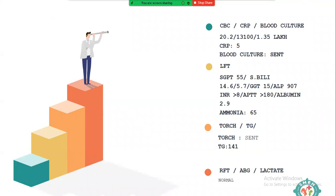Investigation results at our center: hemoglobin 20, WBC 13,000, platelets improved to 135,000, CRP 5, blood culture later turned out negative. On LFT, SGPT was 55, bilirubin still high with elevated direct component — consistent with conjugated cholestasis. GGT was normal, but INR was greater than 8, with liver function deteriorating rapidly every day. Albumin was 2.9, ammonia 65. TORCH titers, triglycerides, RFT, blood gas, and lactate were all normal.